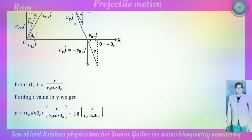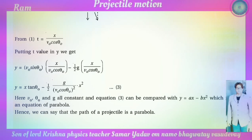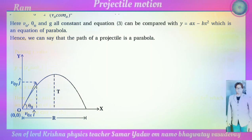From equation 1, t equals x divided by (v-zero cos theta-zero). Substituting into y, we get: y equals sin theta-zero times (x / v-zero cos theta-zero) minus one-half g times (x / v-zero cos theta-zero) squared. This simplifies to y equals x tan theta-zero minus (g / 2 v-zero-squared cos-squared theta-zero) times x-squared. This is of the form y equals ax minus bx-squared, which is the equation of a parabola. Hence the path of the projectile is a parabola, as shown in the figure.